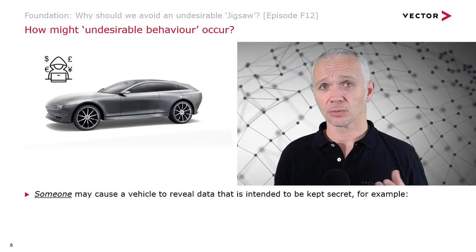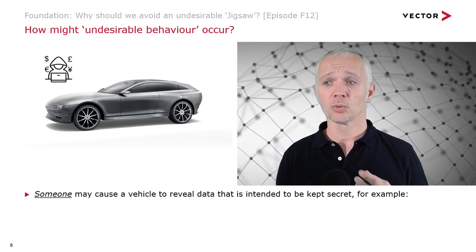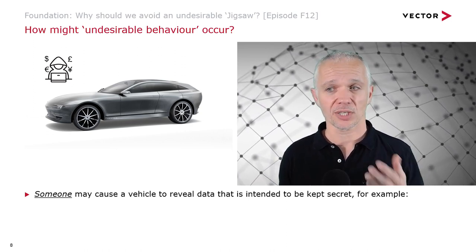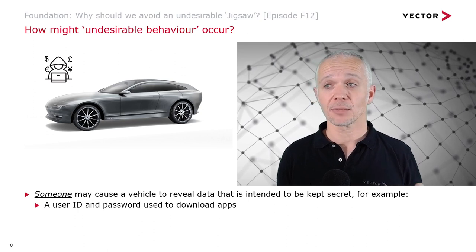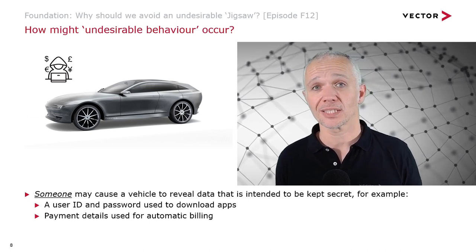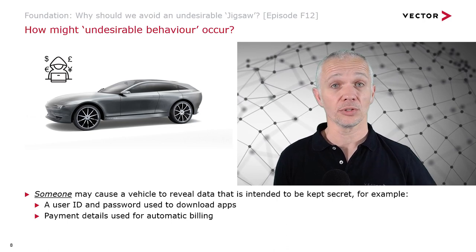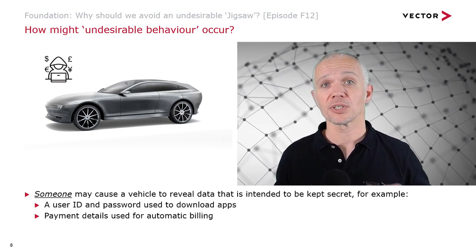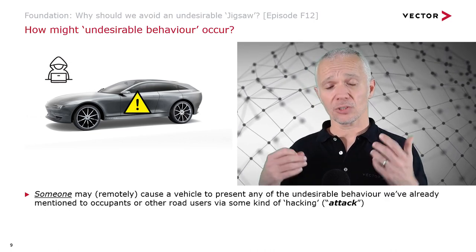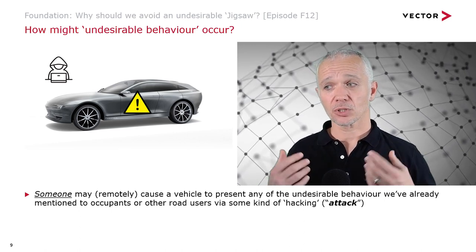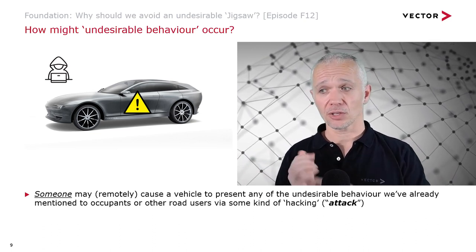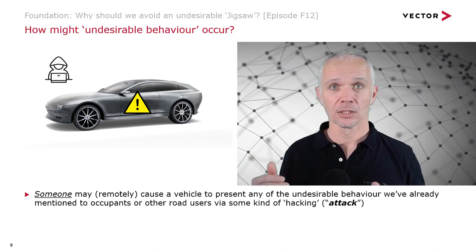Beyond the vehicle itself, somebody might cause a vehicle to reveal data that's intended to be kept secret. An example would be gaining access to a user ID and password used to download apps, or payment details used for automatic billing — such as for a toll road you've set up to pay automatically. If someone gets your payment details, they can take all your money. And of course, somebody might be able to cause a vehicle to present any of the undesirable behaviour already discussed, to occupants or other road users, via some kind of hacking or attack.